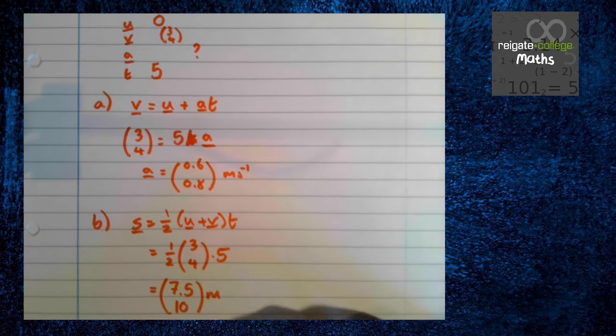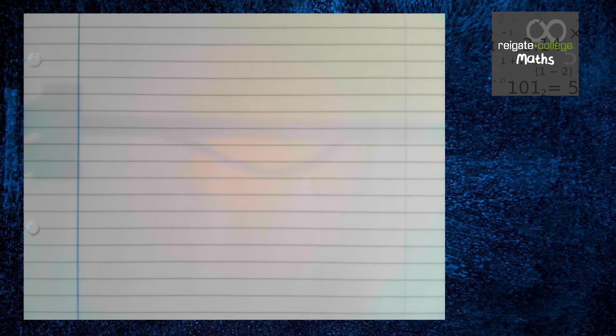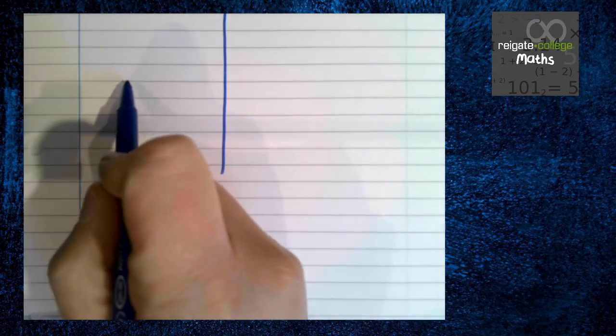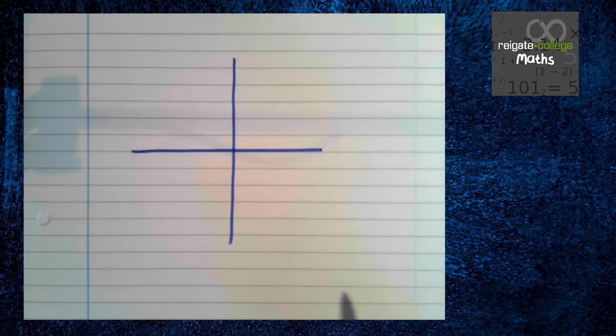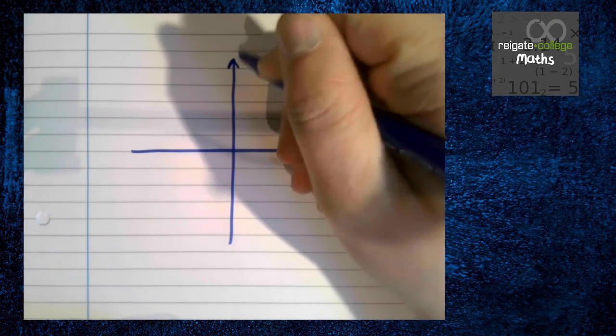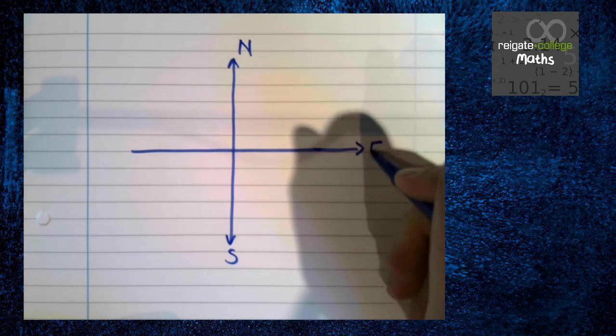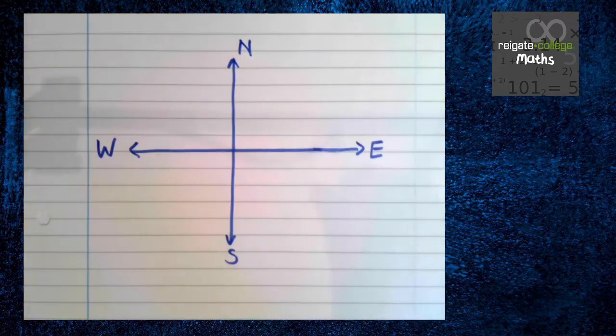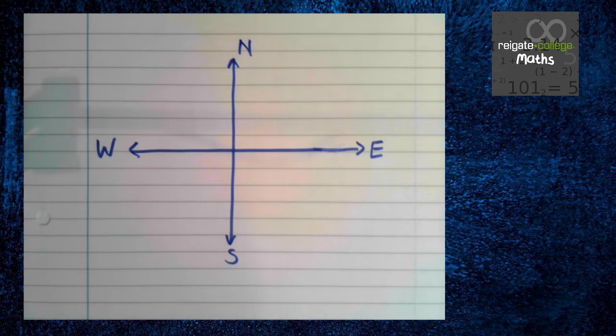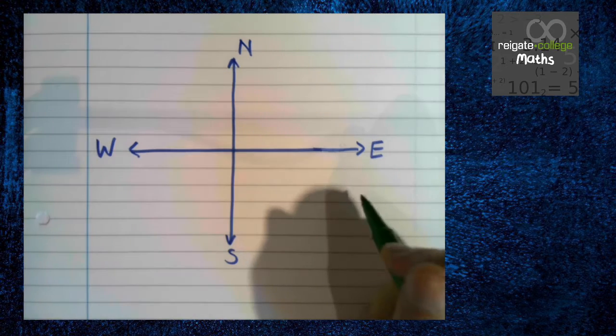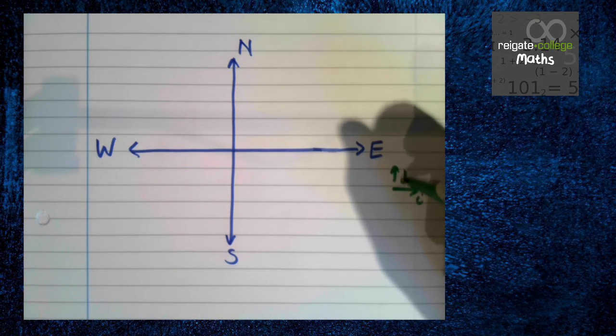The last thing you need to really focus on potentially with this type of question is the compass, which sounds very strange, but it is very important. Because sometimes you'll have questions saying, find the time when the particle is moving in a north easterly direction. So we need to have our compass ready. So obviously here we've got north, south, east and west. And typically, unless you're told otherwise, which would be very rare, i is this way and j is this way.